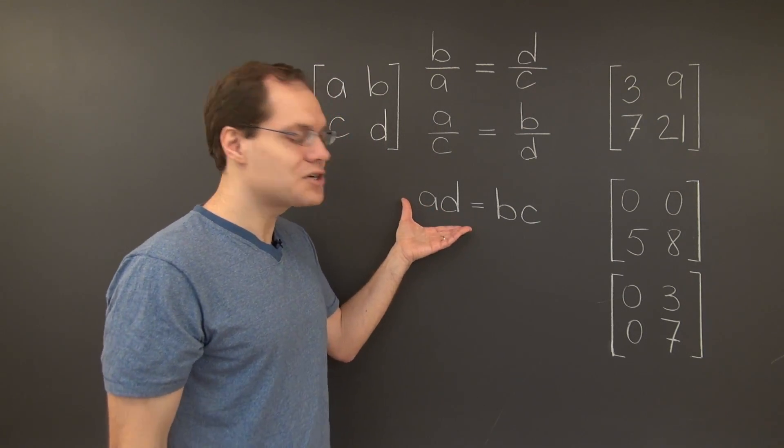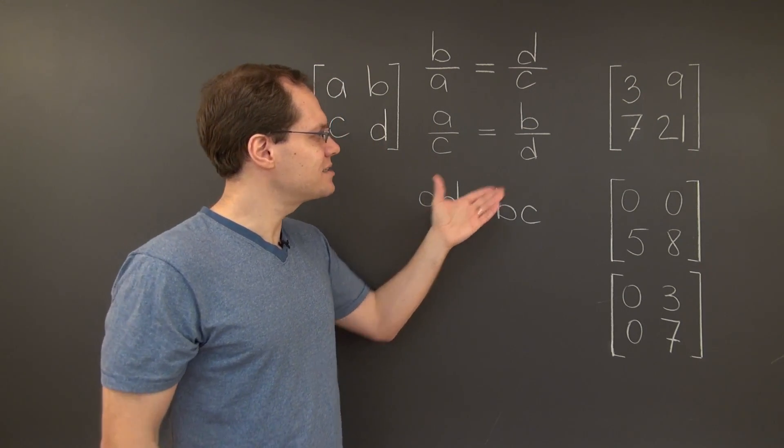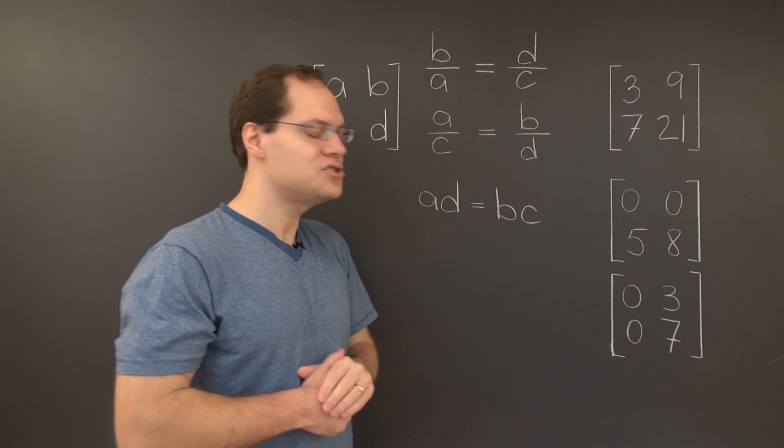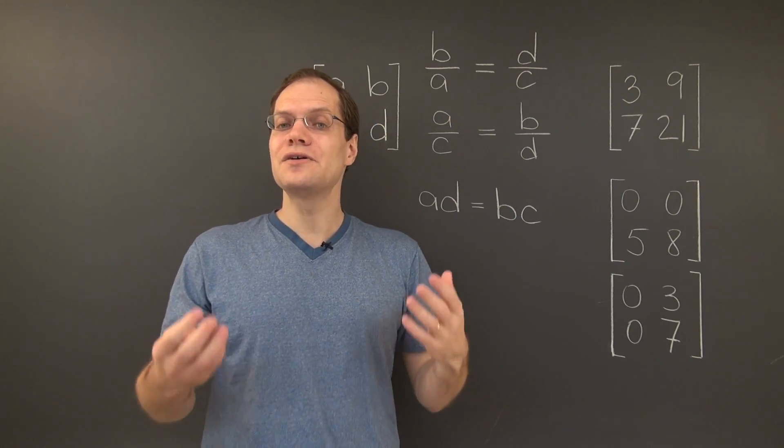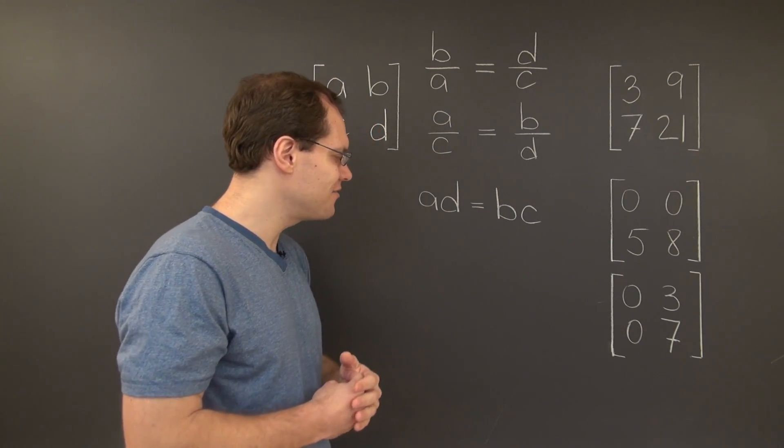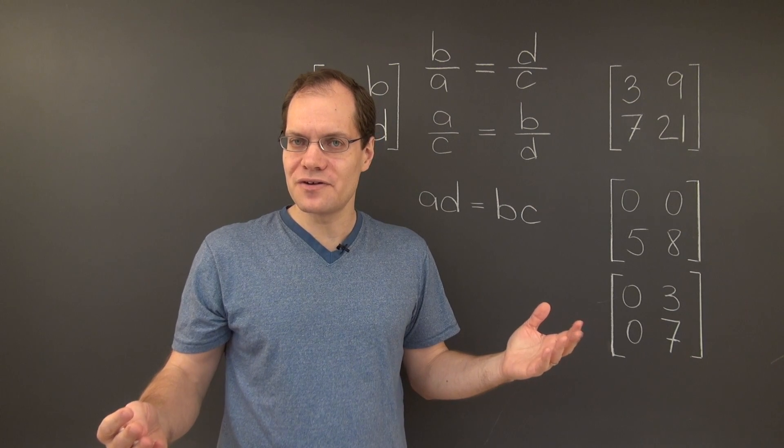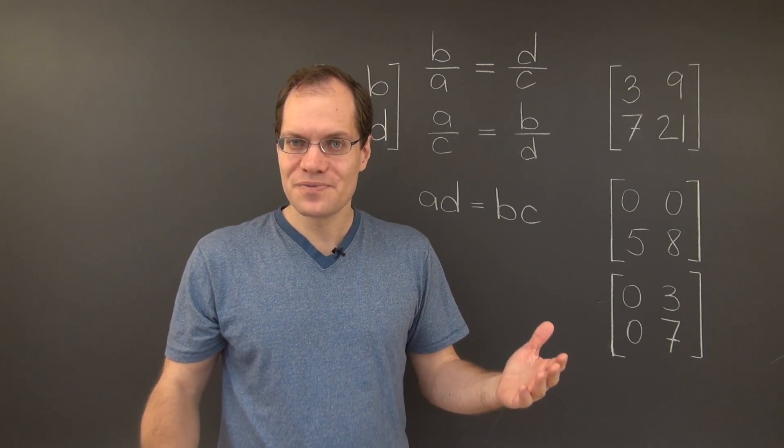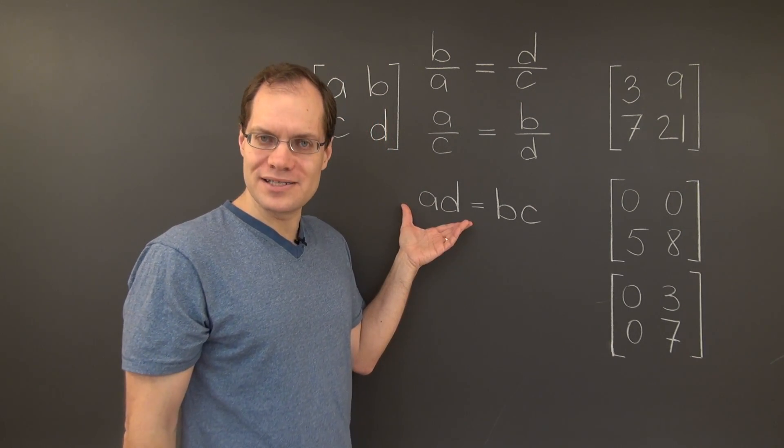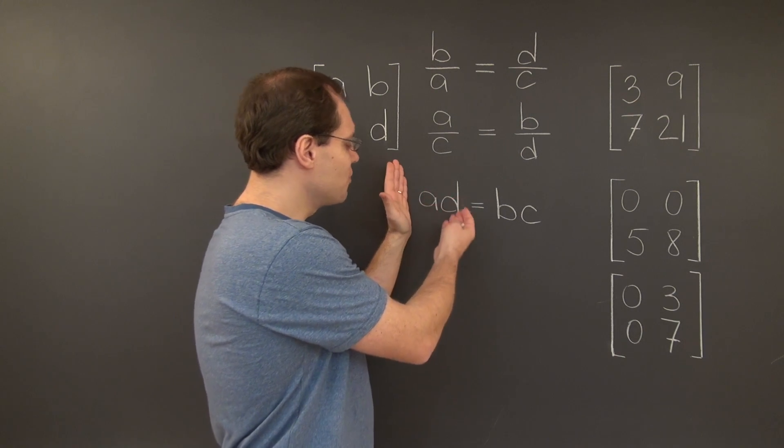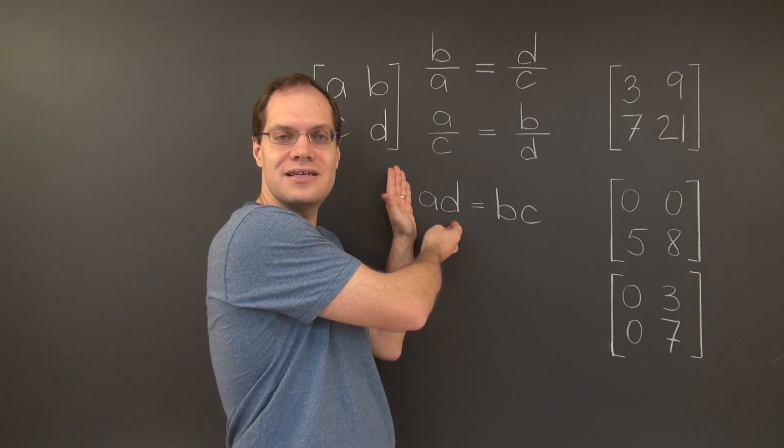And so, this criterion tells us that the columns of each one of these three matrices are linearly dependent and it doesn't have any issues whatsoever with division by 0. In fact, this is so robust that it is from this that the determinant is inspired.